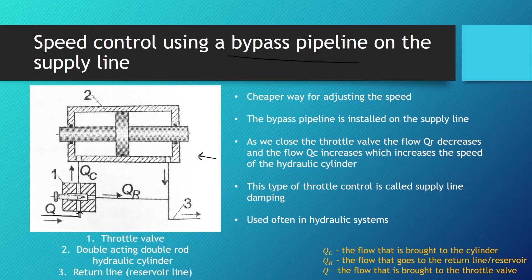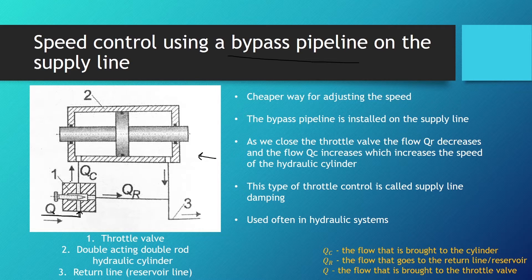One part of the fluid goes to the cylinder as QC, and one part goes back to the reservoir via the return line, marked with number three. With the closing of the throttle valve, the return flow QR is decreased and the cylinder flow QC is increased, which increases the speed of the hydraulic cylinder. This type of control is called supply line damping because we damp the fluid flow on the supply line to the cylinder.